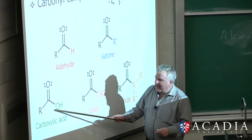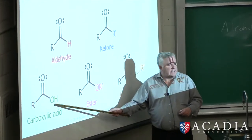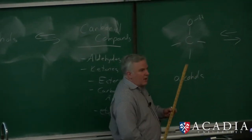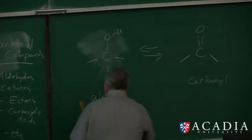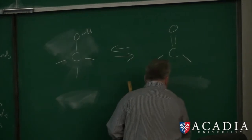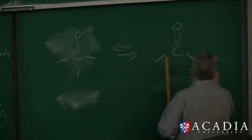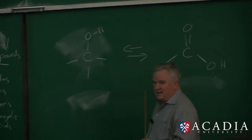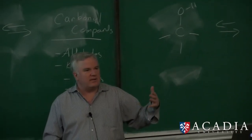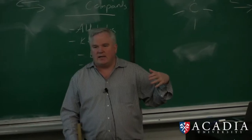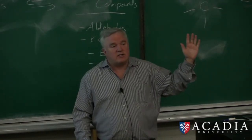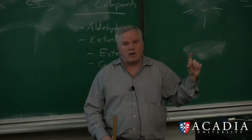That looks a little bit like an alcohol, doesn't it — we have OH bonded to a carbon. There's a reason we call it a carboxylic acid: it's because it's acidic. It's slightly acidic, and that's why we call it an acid.